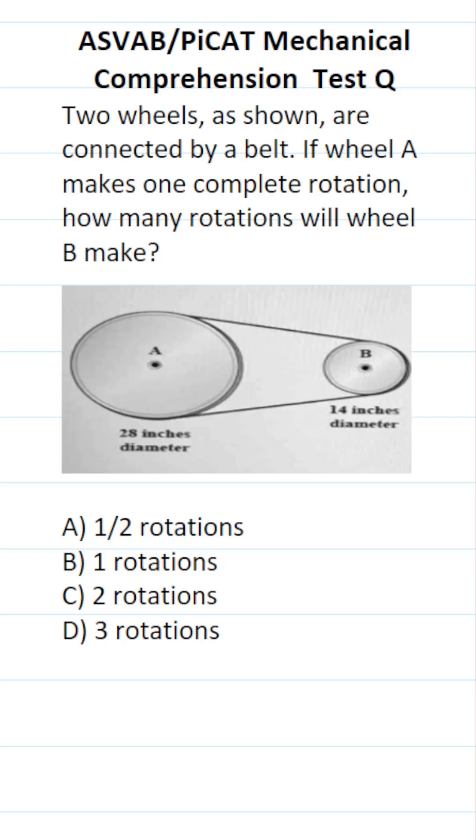So in this case, we're not given the number of teeth on these wheels. Instead, we're given their diameters, and we can quickly compute a gear ratio using their diameters.